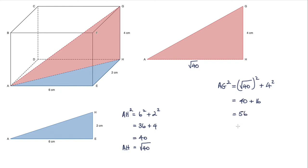AG squared is 56, so AG is the square root of 56. The square root of 56 is 7.5, so we've got 7.5 centimeters to one decimal place.